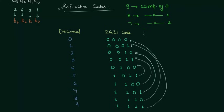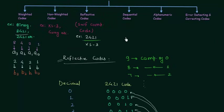Now we will move to the next type of code: sequential codes. In sequential codes, each succeeding code is one binary number greater than the preceding code. Examples include the 8421 code and the excess-3 code.